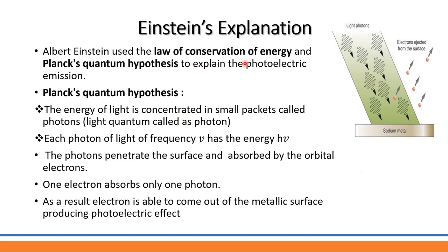Einstein used two principles — the law of conservation of energy and Planck's quantum hypothesis — to explain photoelectric emission. The law of conservation of energy states that total energy must be conserved. According to Planck's quantum hypothesis, the energy of light is concentrated in small packets called quanta of energy, or photons.